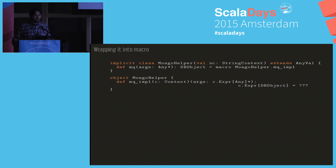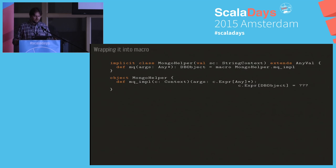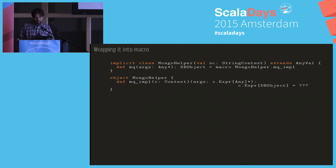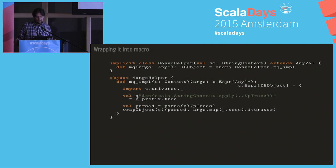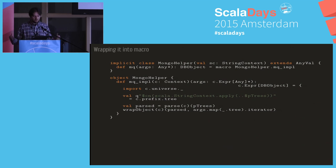The macro implementation function doesn't have a direct reference to StringContext, but that's not a big problem. We can obtain the parts of the string from the prefix tree by using pattern matching to get those trees, parse them, and then create the object. Let's check what's in the parse method. Since we already know these parts are just strings, we can use pattern matching again to extract the string, put it into the parser, and if parsing succeeds we get an object.